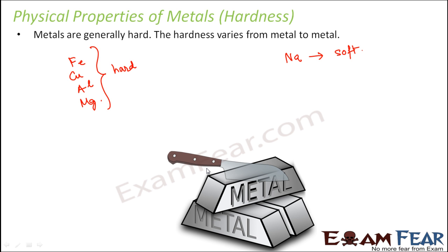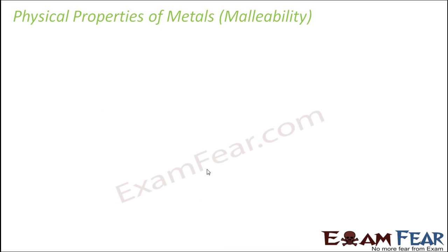Whatever physical properties we discuss, that doesn't mean all metals will have the same property — there are exceptions and variations within metals. For example, even iron, copper, and magnesium are not equally hard. The hardness varies from one metal to another, and some metals like sodium are quite soft. That is why substances are not classified as metals and non-metals based on their physical properties alone, because there are too many exceptions. Therefore, the definition is: a substance that has a tendency to lose electrons is classified as a metal.